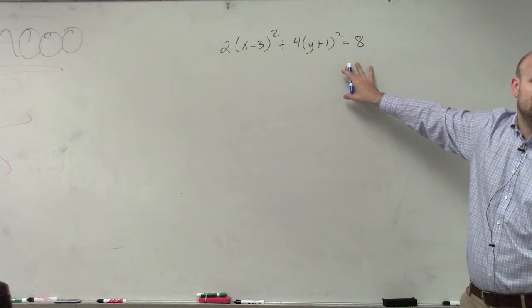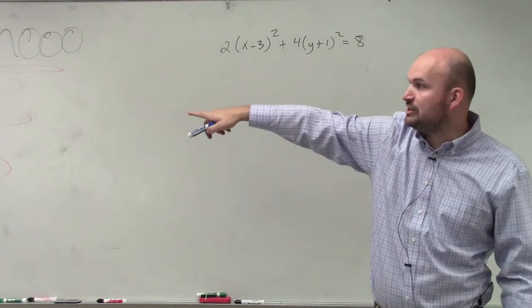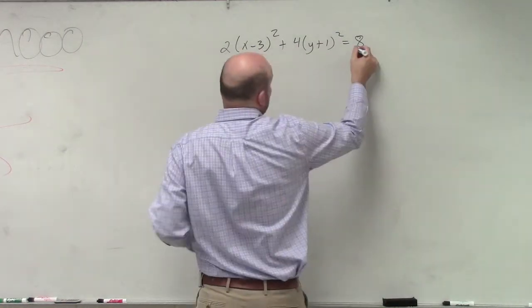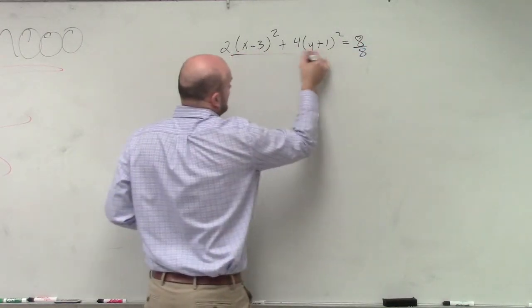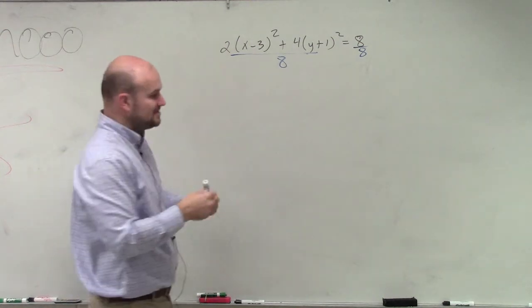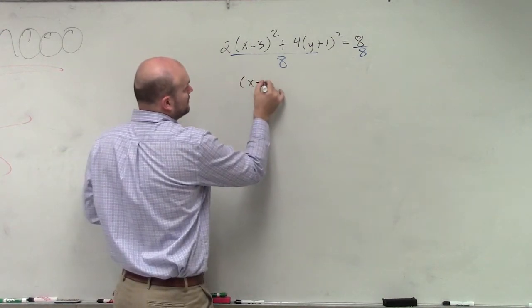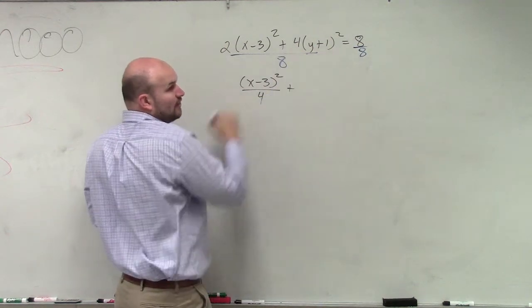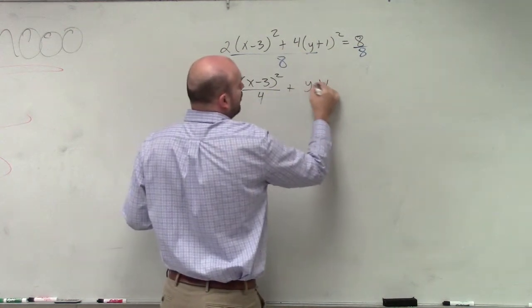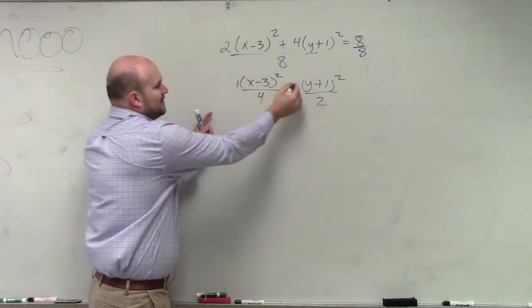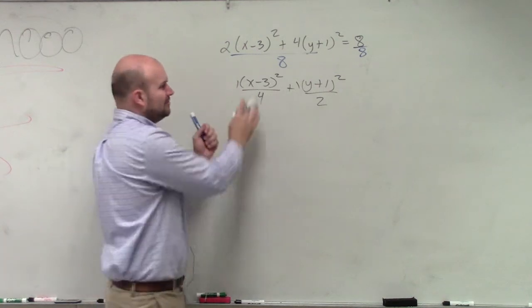This is an ellipse, meaning for an ellipse, we need to set our equation equal to the value of 1. So to do that, divide by 8. Now, 2 over 8 gives us 1/4, and 4 over 8 gives us 1/2. So you could put the ones up there if you wanted to, but there's no real point.